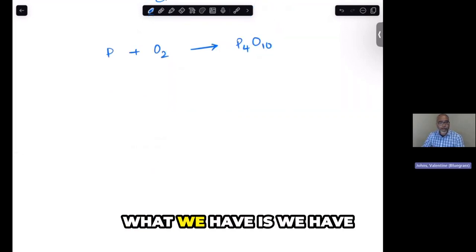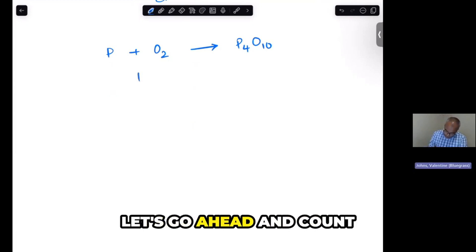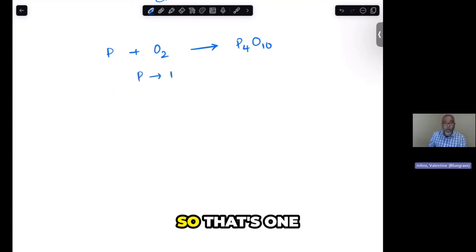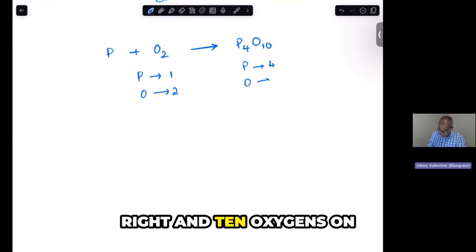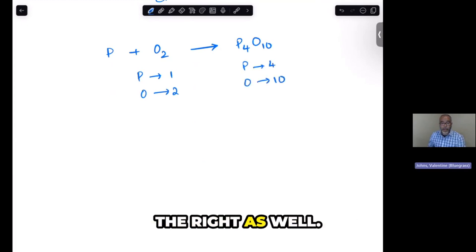Alright, so in this problem, we have phosphorus plus oxygen gives us P4O10. Let's go ahead and count the atoms on the left. That's 1 phosphorus and 2 oxygens. We have 4 phosphoruses on the right and 10 oxygens on the right as well. So none of them are balanced.